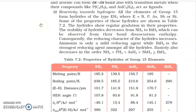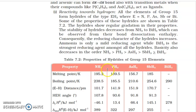Good morning dear students. In continuation of P-block elements Group 15, today we will discuss the chemical properties of nitrogen family. First: reactivity toward hydrogen — that is a very important part. All elements of Group 15 form hydrides of type EH3, meaning NH3, PH3, AsH3, SbH3, and BiH3.